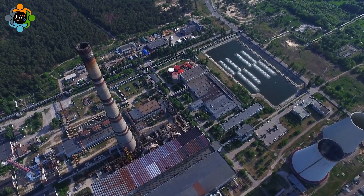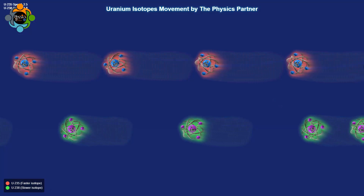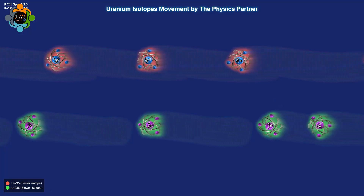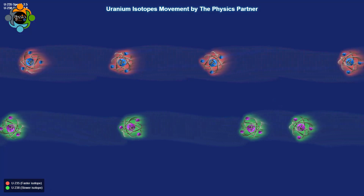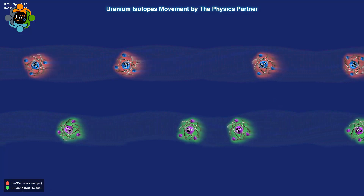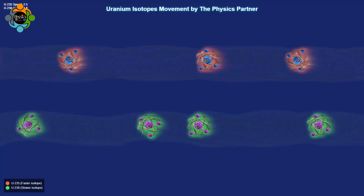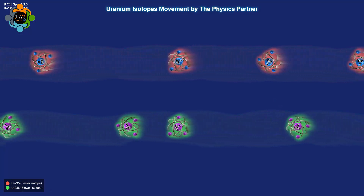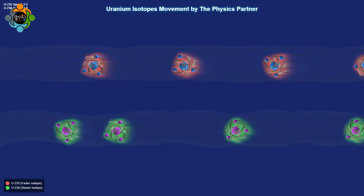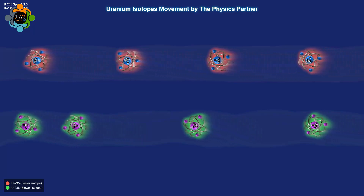The physics behind enrichment is all about tiny differences in mass and speed. Even though uranium-235 and uranium-238 are almost identical, their slight mass difference allows us to separate them using high-speed rotation or selective diffusion.